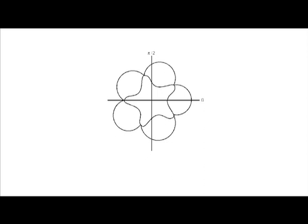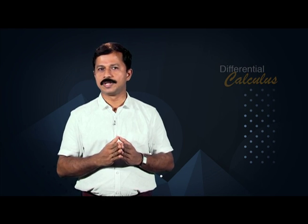The figure shows the graph of the polar equation r is equal to 2 plus cos(5theta/2). In this session, we discussed various methods for tracing polar curves, illustrated through a number of examples. We will continue our discussion on drawing polar curves in the next session, where we will draw cardioids and families of roses. See you next time. Have a great day.